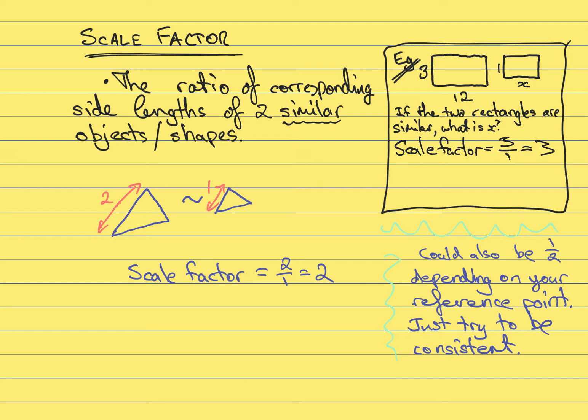Okay, so then we want to look at what the value of x is down here. So just as we would need to multiply this side length, 1, by the scale factor of 3 to get this side length, we need to multiply this side length, x, by 3, to get this side length, 12.